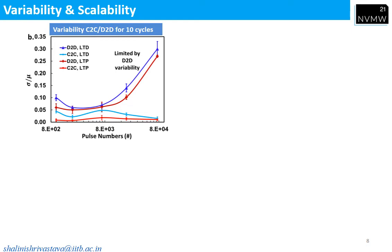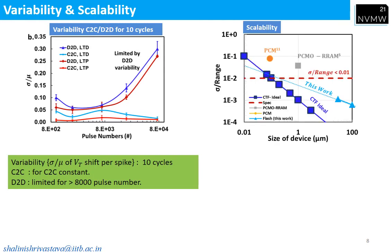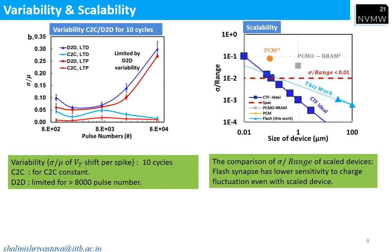The study of variability is done for 10 cycles. Cycle-to-cycle variability is found to be constant. The synaptic behavior is limited by device-to-device variability, and that only occurs for more than 8000 number of pulses. The variability of the scaled device is also studied and found to be less sensitive compared to the state of the art.